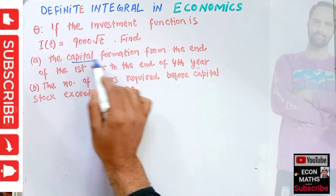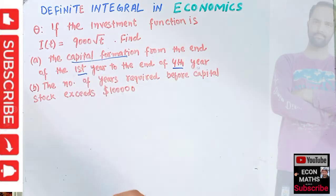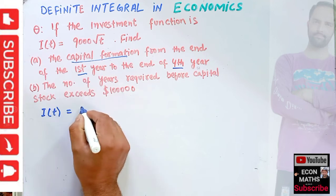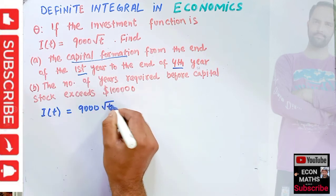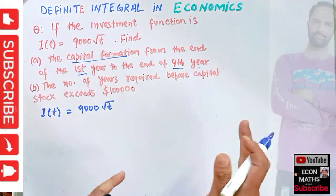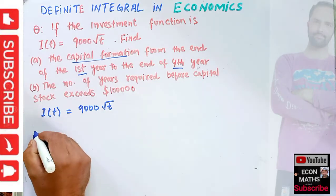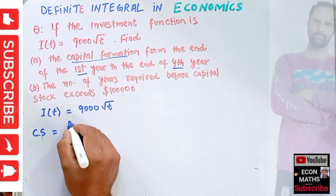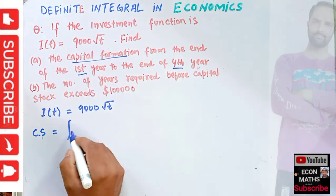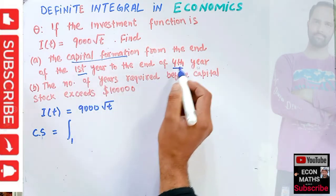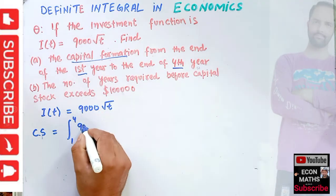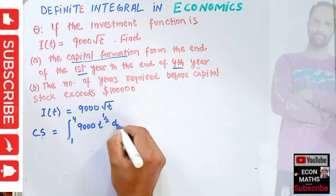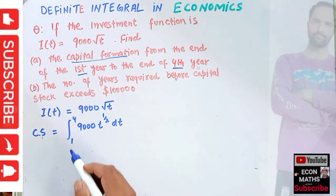For the first part, we need to find the capital formation from the end of the first year to the fourth year. The investment function is I(T) = 9000√T. The capital stock will be equal to the definite integral from year 1 to year 4 of 9000 times T to the power 1/2 dt. This gives us the capital formation from the end of the first year to the fourth year.